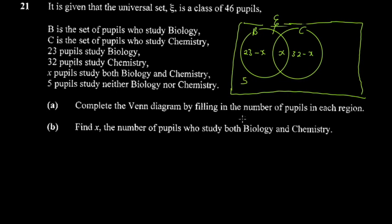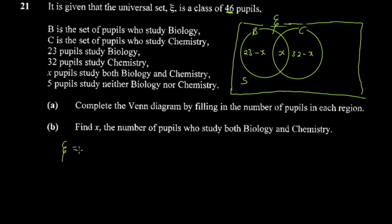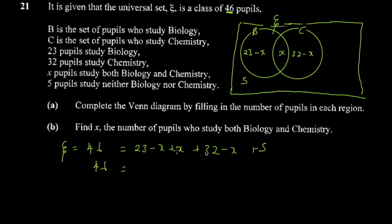You're asked to find x, the number of pupils who study both biology and chemistry. The universal set equals 46, so you add everything: 23 minus x, plus x, plus 32 minus x, plus 5 equals 46. The plus x and one of the minus x cancel, leaving 55 plus 5 minus x, which gives 60 minus x equals 46.